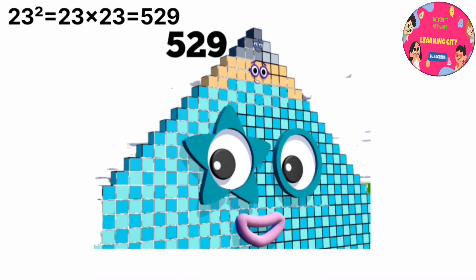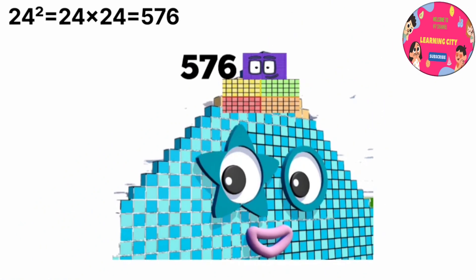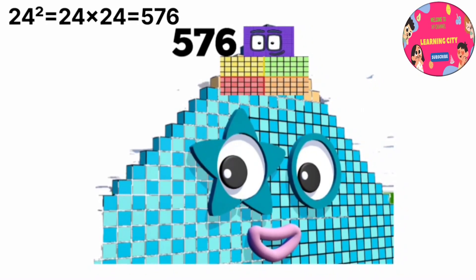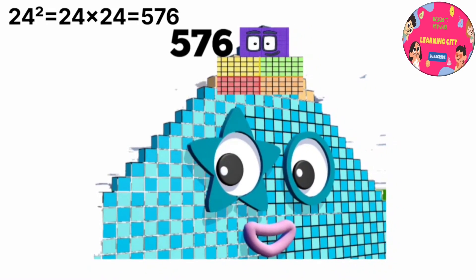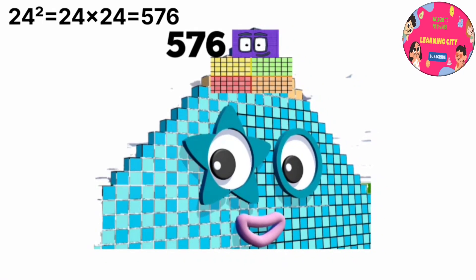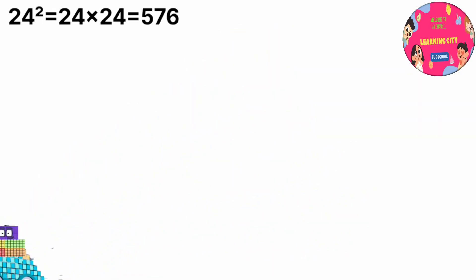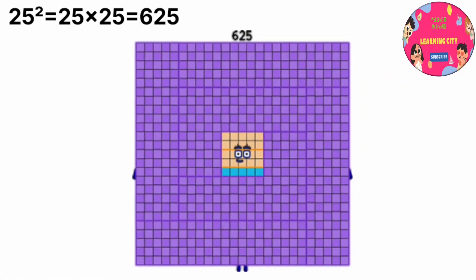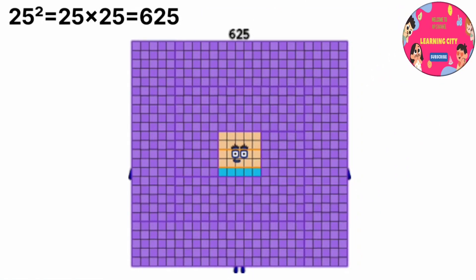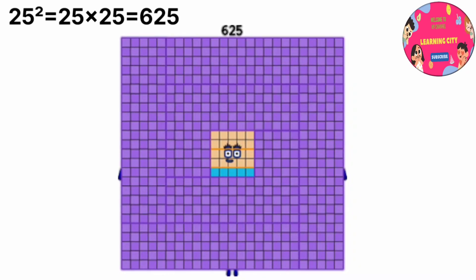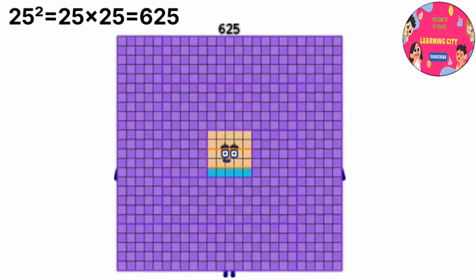24 power 2 equals 576, or 24 x 24 equals 576. 25 power 2 equals 625, or 25 x 25 equals 625.